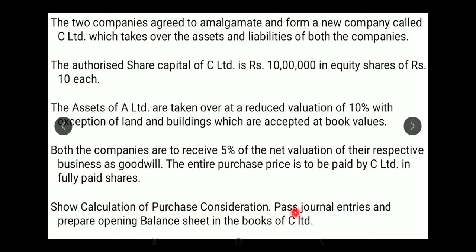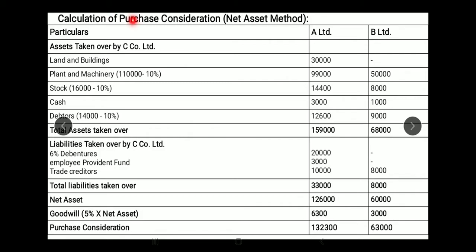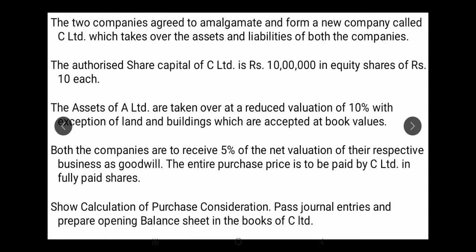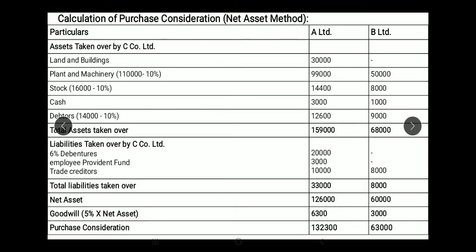We need to show the purchase consideration calculation, pass journal entries, and prepare the opening balance sheet in the books of C Limited. For PC calculation we use the net asset method because the net payment method requires knowing how many shares are issued and at what price — that information has not been given. So we use net asset method: assets taken over minus liabilities taken over.